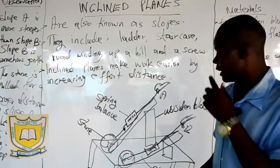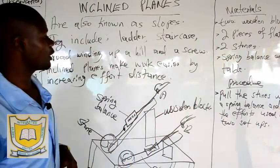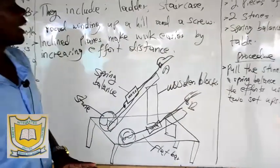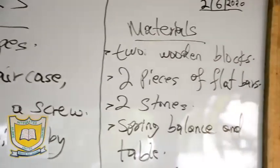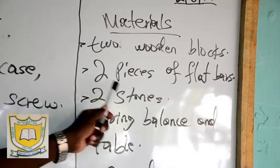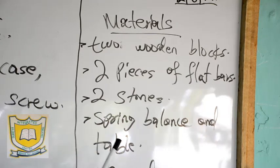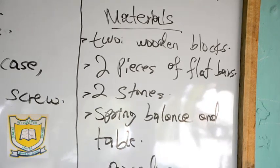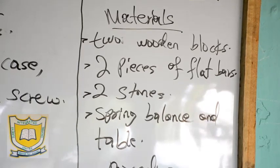There is an experiment here which we will have to describe on how inclined planes work. Before we come to the picture, let us see some of the materials required to perform this experiment. Some of the materials needed are two wooden blocks, two pieces of flat bars, two stones, a spring balance, and a table.